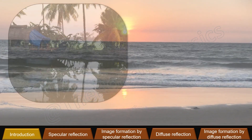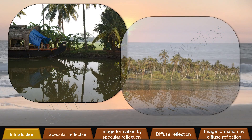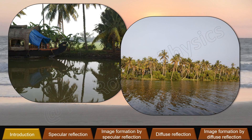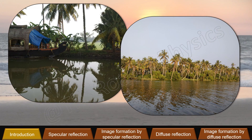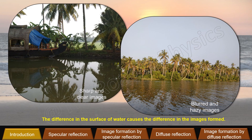But first, take a look at these two images. They both show reflection of light from a water body. Can you observe any difference between the images formed in each? In one of them, the water body reflects sharp and clear images of the objects around it, while in the other the water body reflects blurred and hazy images. What is the reason behind such a striking difference? Let us find out.